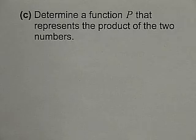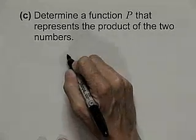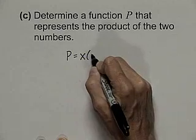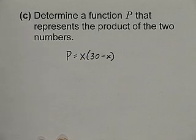Continuing with that application, what we want to do is determine a function p that represents the product of the two numbers. p is the function x times the other number, 30 minus x.